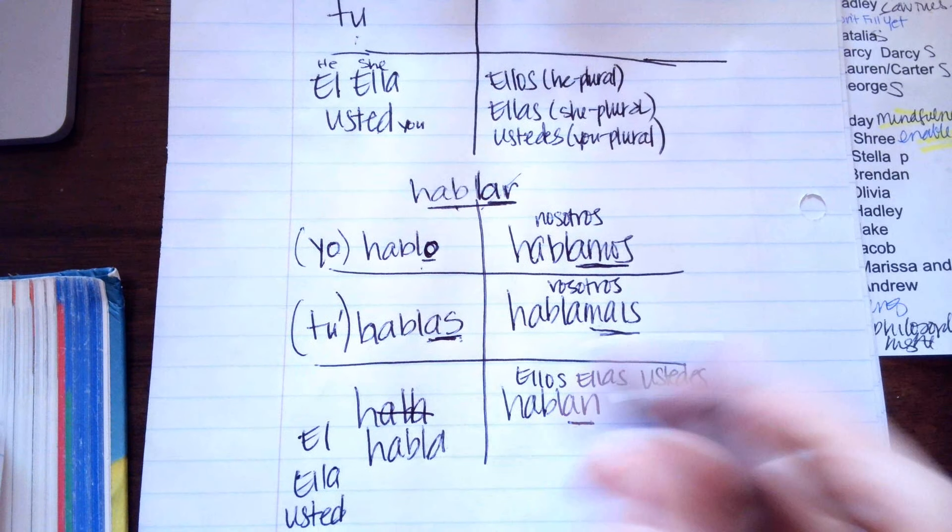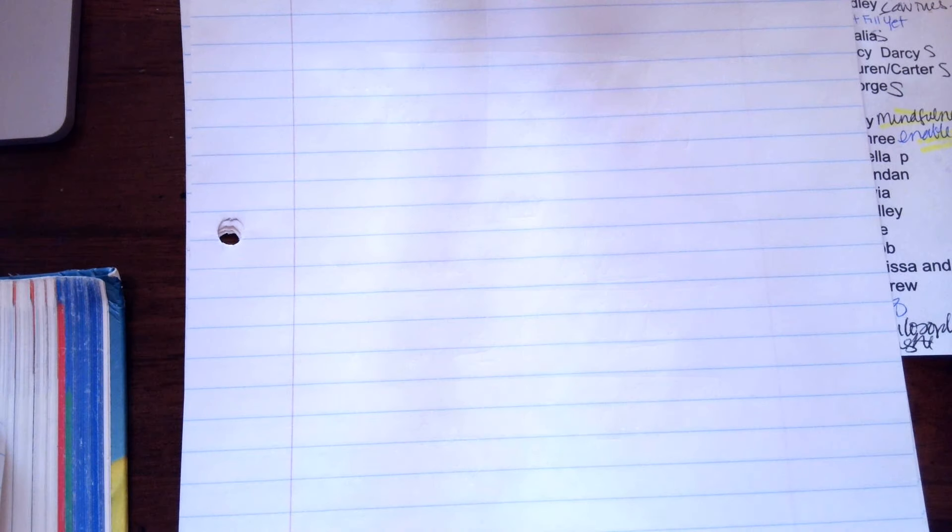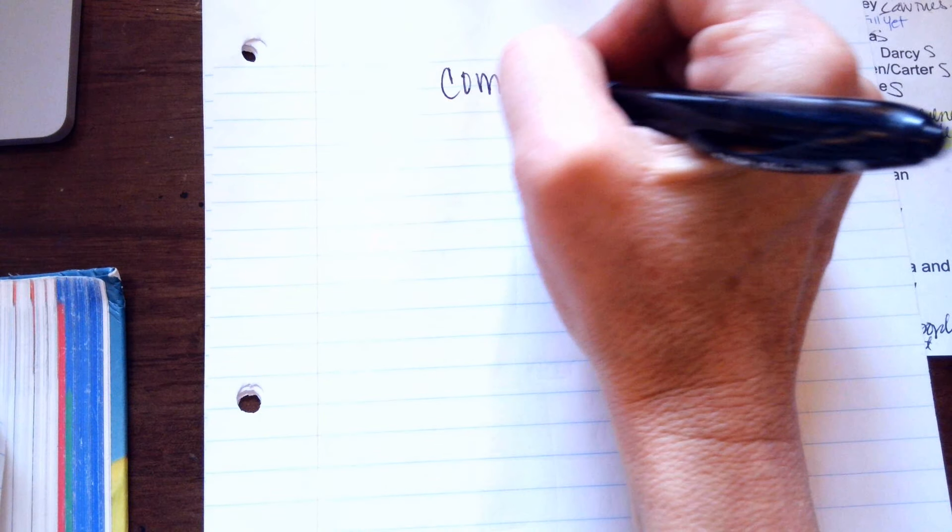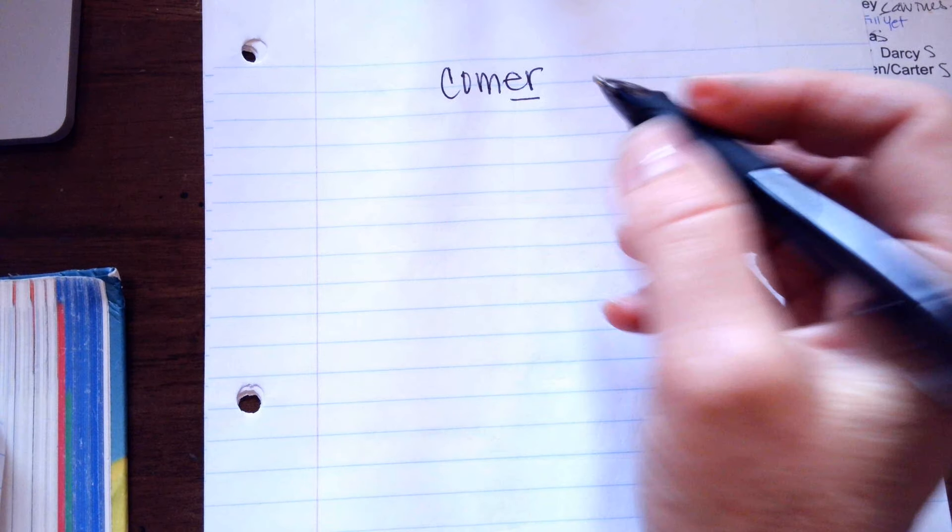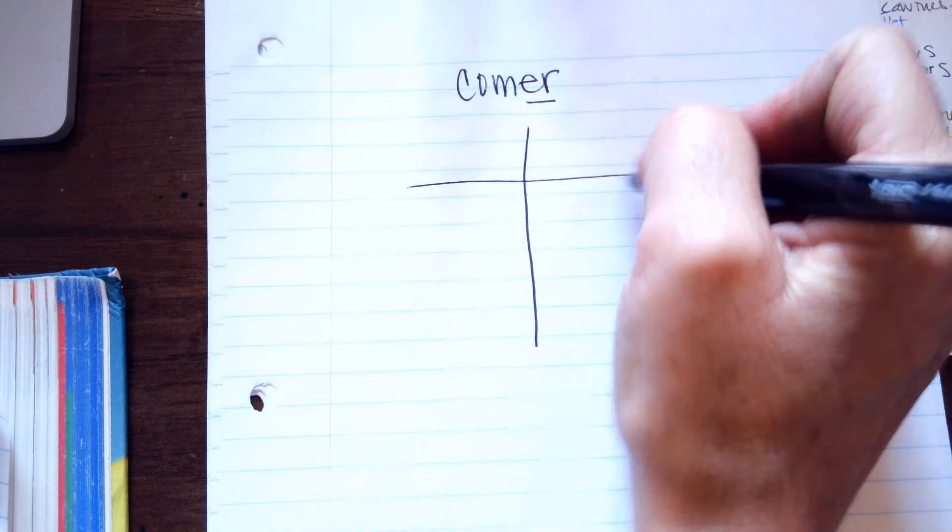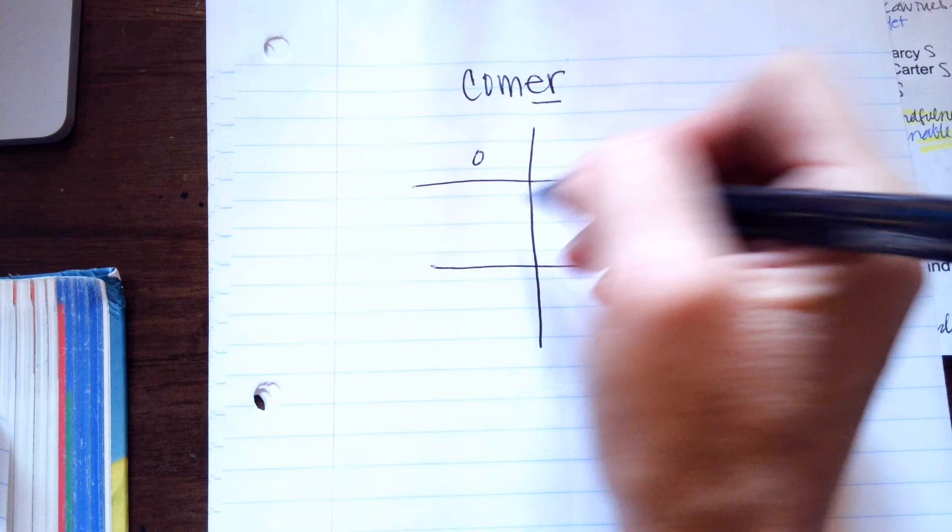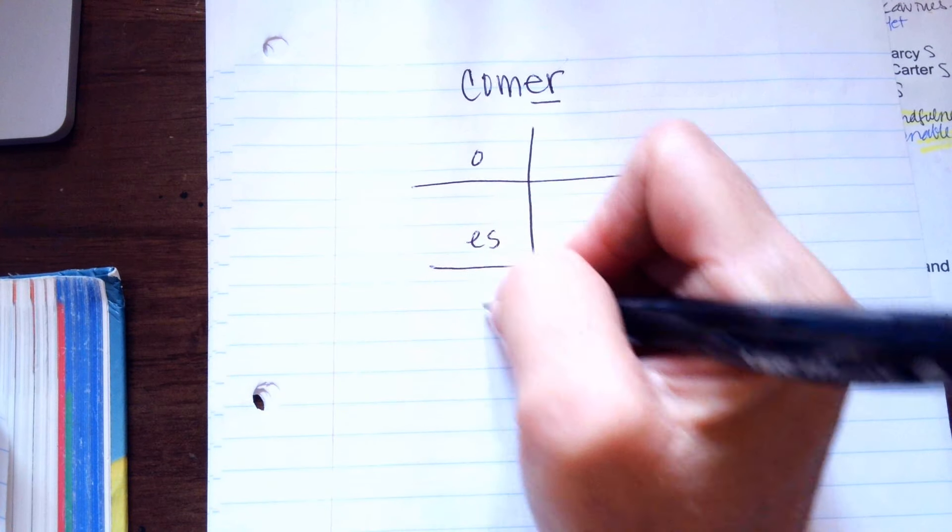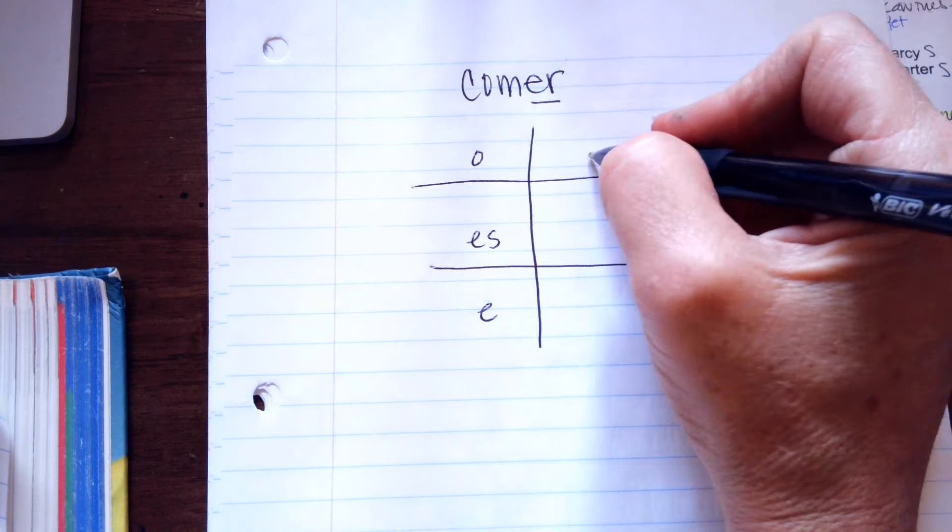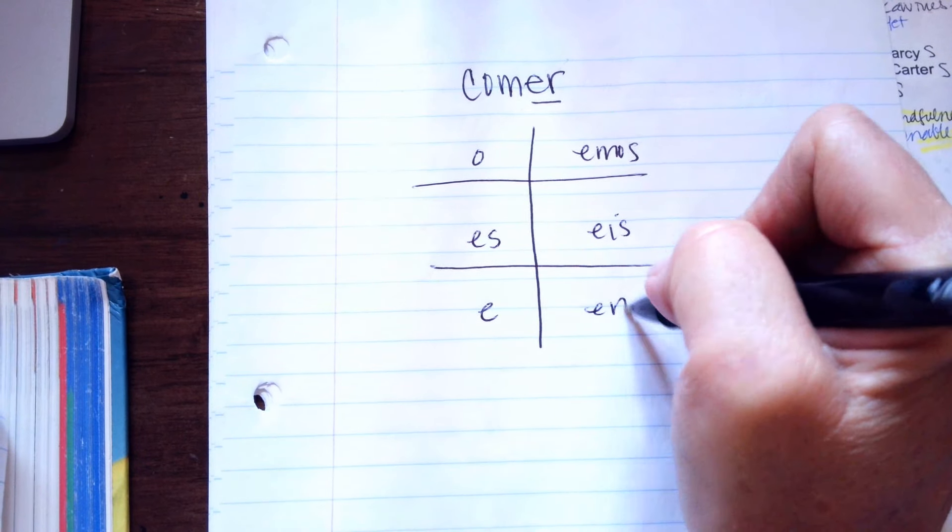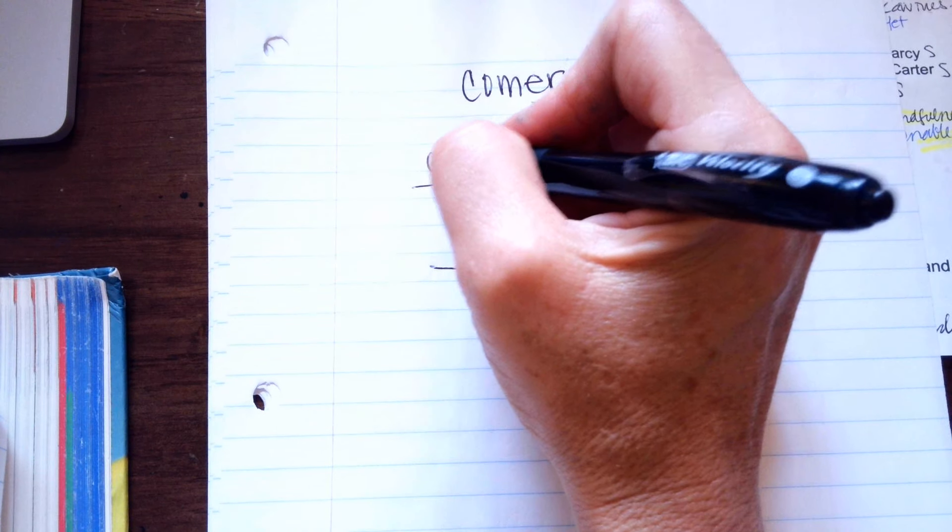You could also have an ER verb like comer. And that ends in ER. And you would still have your diagram. But you would take this off and it would be O, es, e, emos, es, and en. And you would just put the COM in front of it.